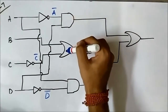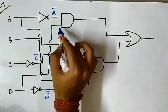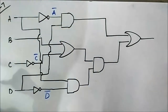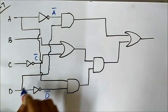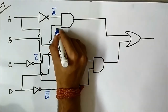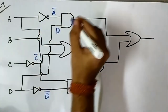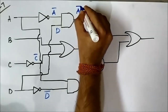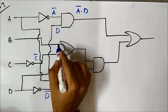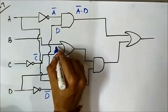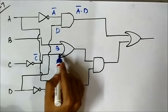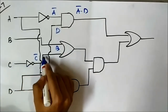The second layer consists of an AND gate, an OR gate, and another AND gate. The first AND gate has inputs A complement and D, so its output is A complement AND D. This OR gate has two inputs: B and C complement, so its output is B OR C complement.